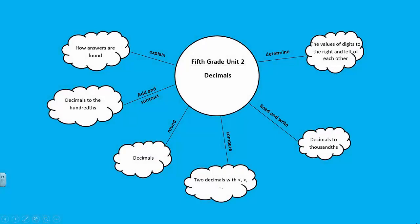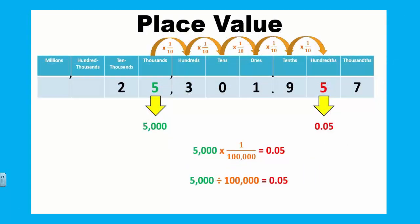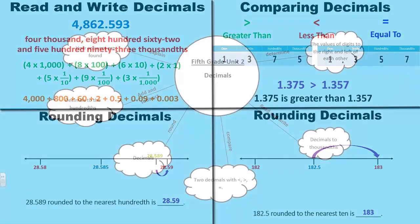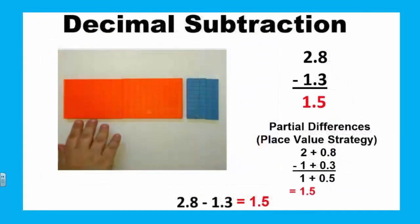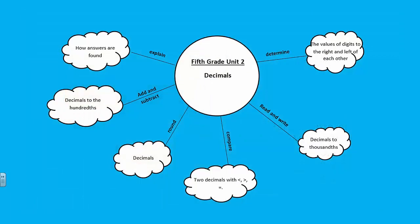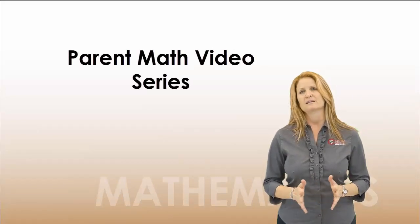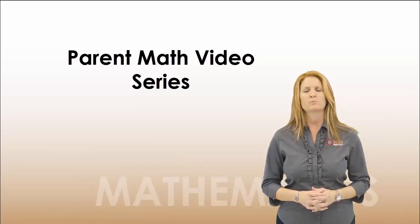In Unit 2, students further their understanding of the place value system by recognizing that in a multi-digit number, a digit in one place represents 10 times as much as it represents to its right and one-tenth of what it represents in the place to its left. Students also read, write, and compare decimals to the thousandths place and use their understanding of place value to round decimals up to the hundredths place. In the final part of the unit, students add and subtract decimals to the hundredths place using concrete models or drawings and strategies based on place value and the properties of operations. Thank you for your time. We know that when families and schools work together, student success increases. Please visit the Cobb County Math Department website for additional information and resources to support your student at home.